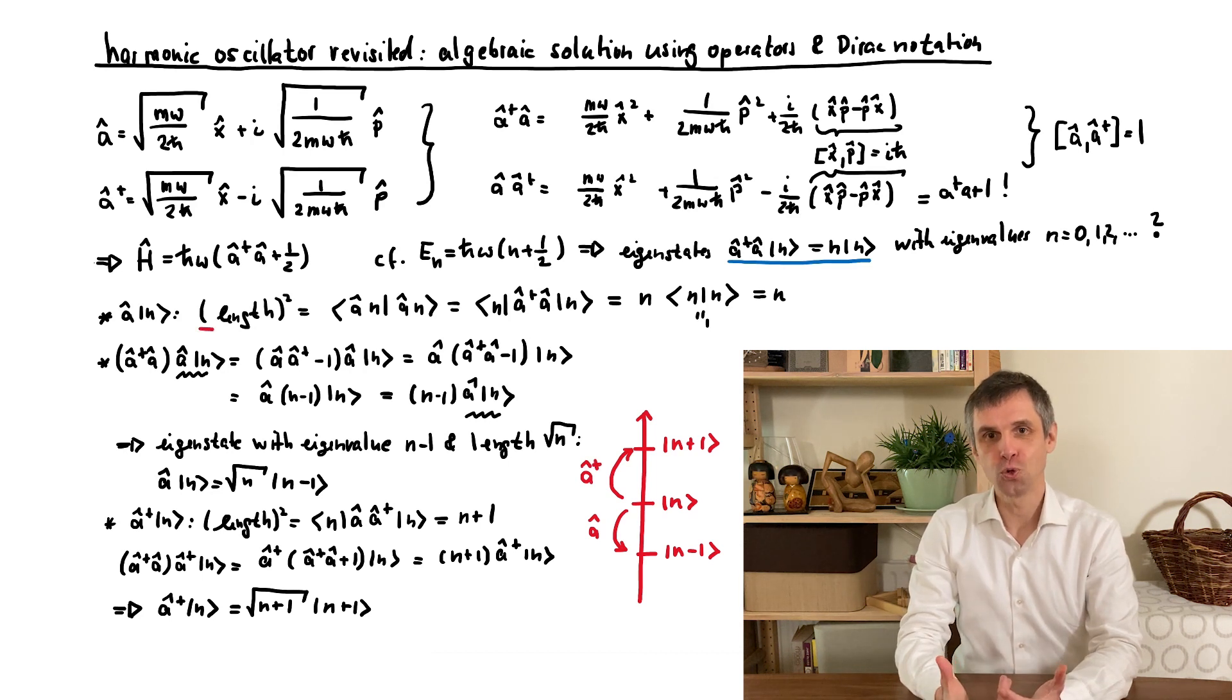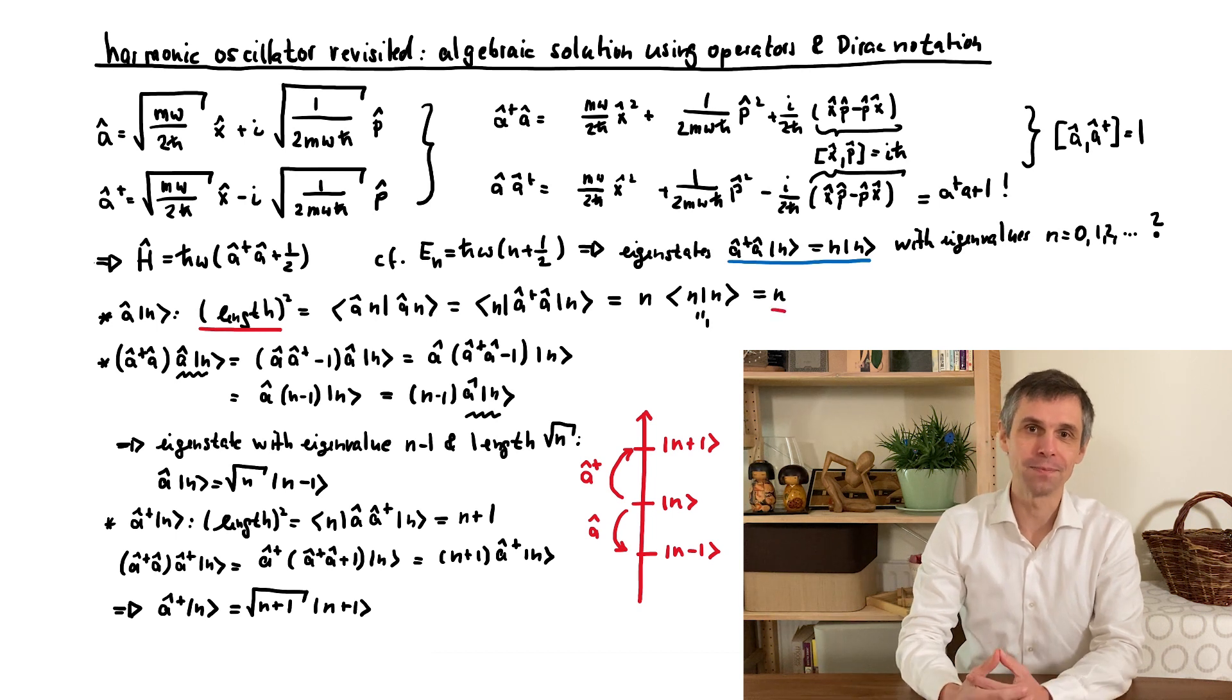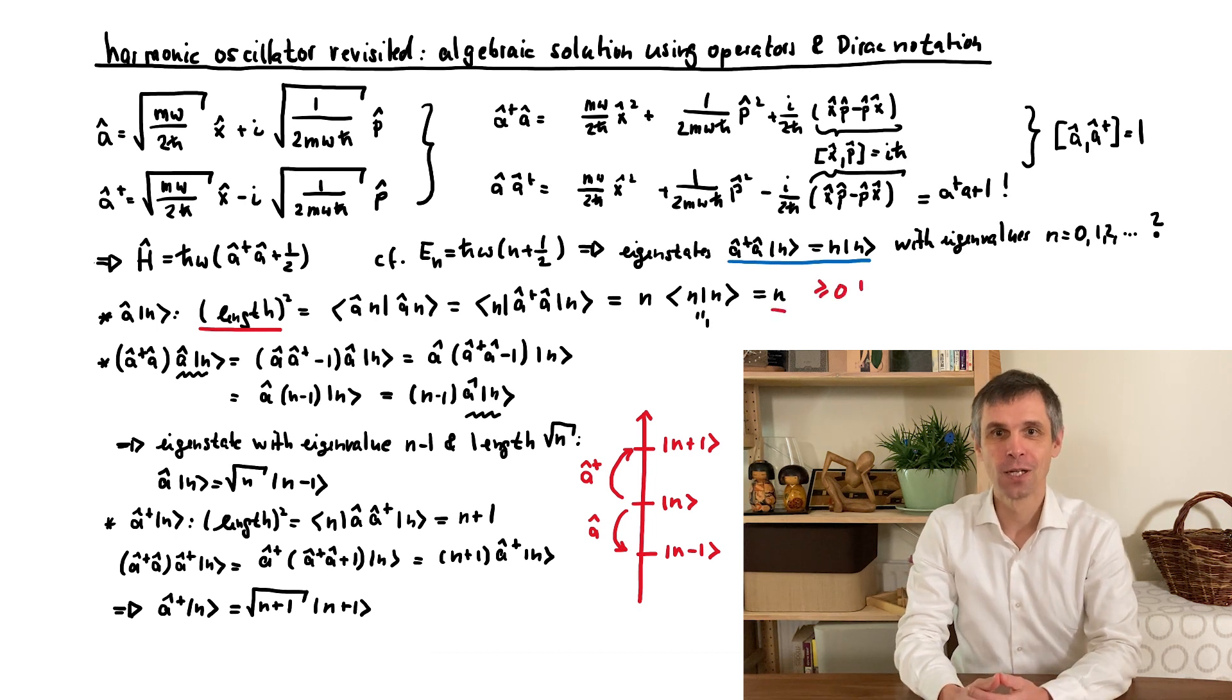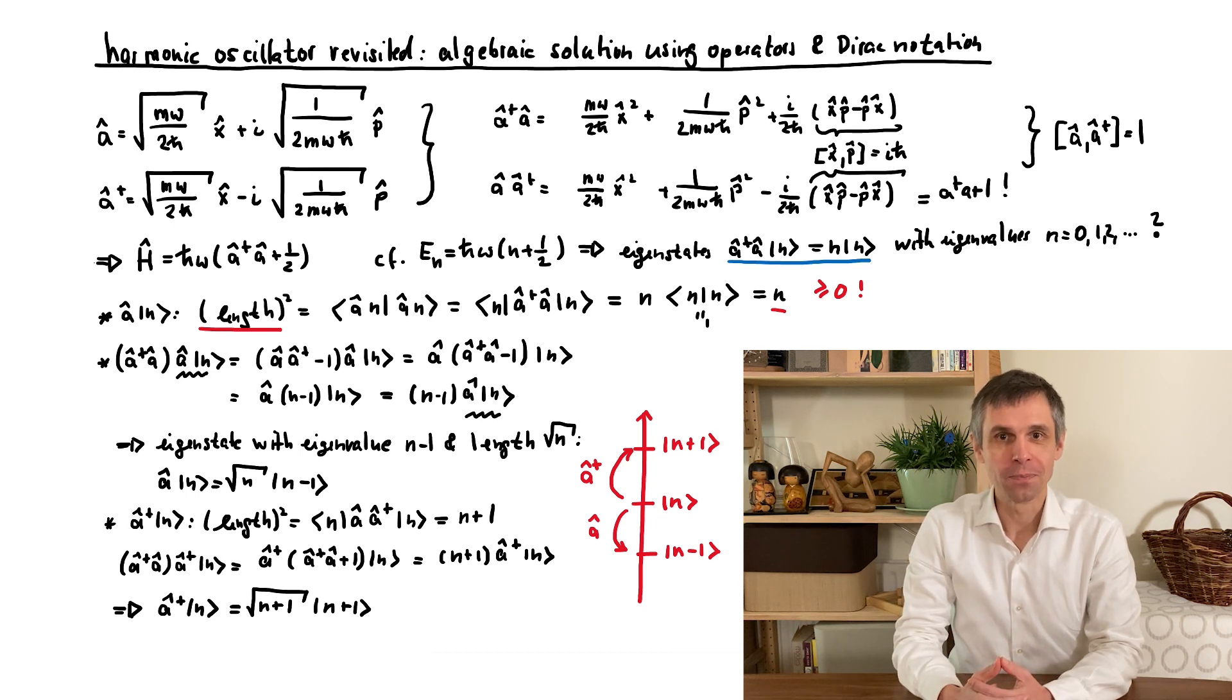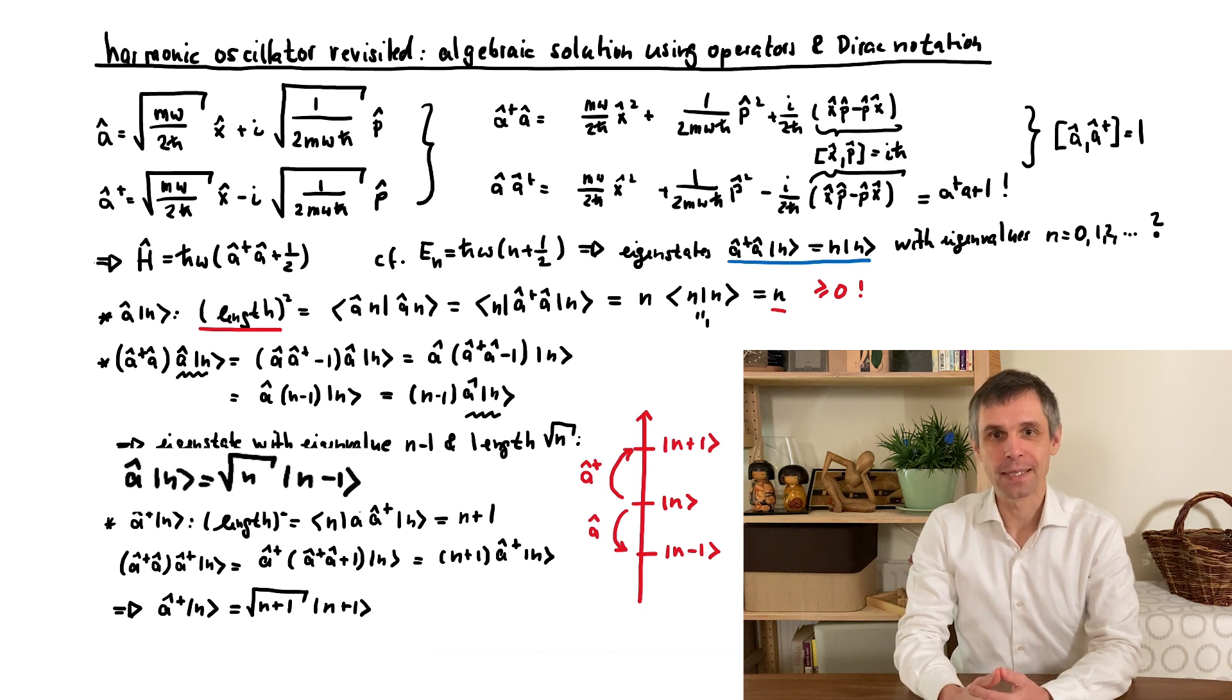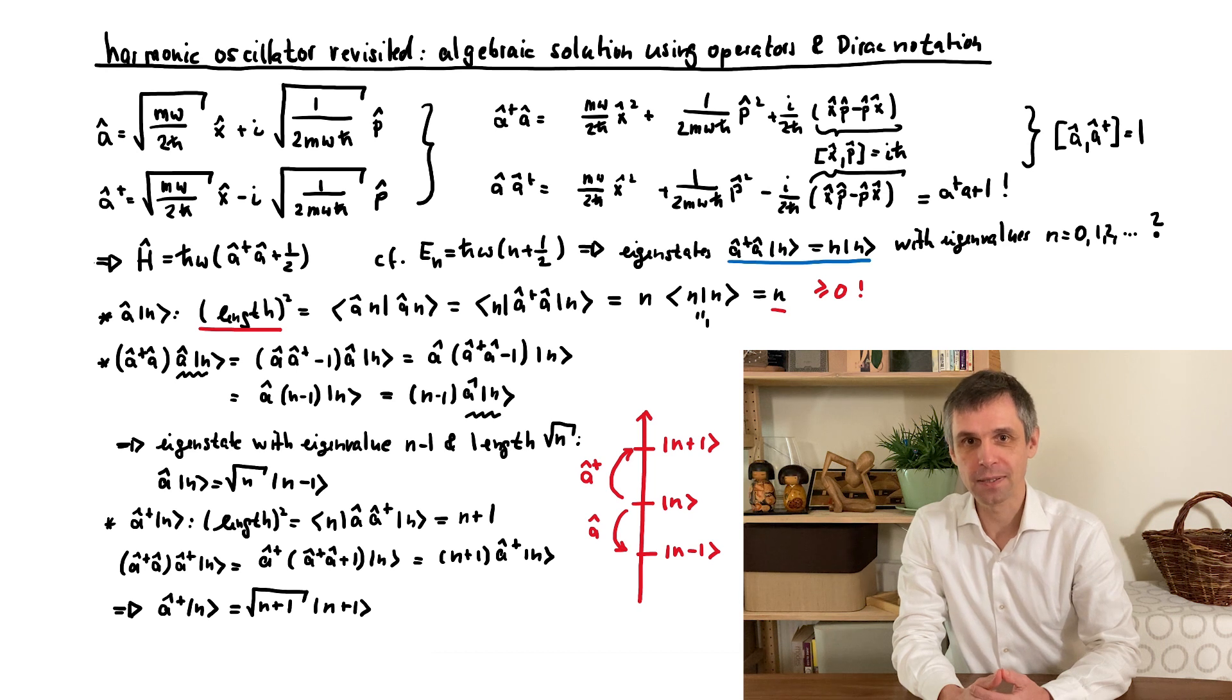But so far we have only fixed the spacing of the rungs. The final step is to utilize that the squared length obtained above can never be negative. So the ladder must terminate when we climb it down. And this is only possible if it stops at the state for which A times the state vanishes.